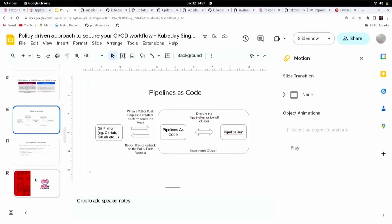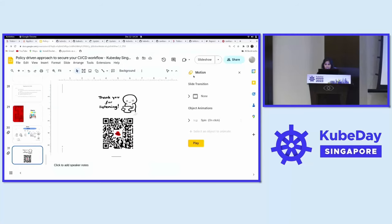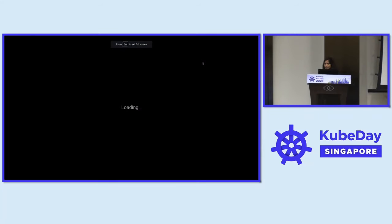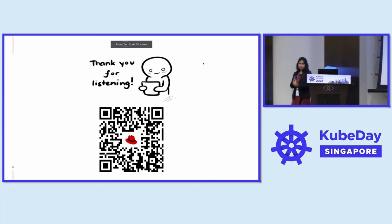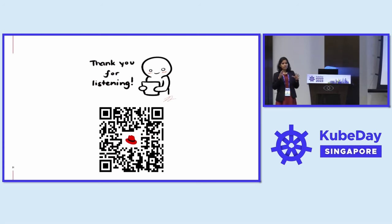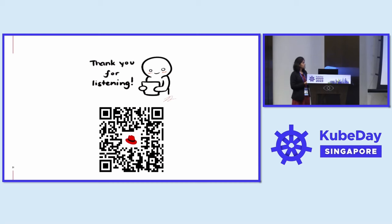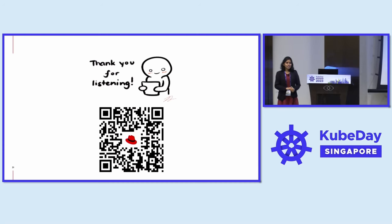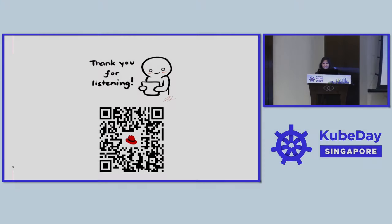That's all for the demo — Tekton, Argo CD, and Kyverno based end-to-end flow. This is a QR code for Red Hat Developers blogs, documentation, and everything. If someone wants to learn about different topics, please take a copy of it. Thank you everyone for being so patient. Thanks a lot.